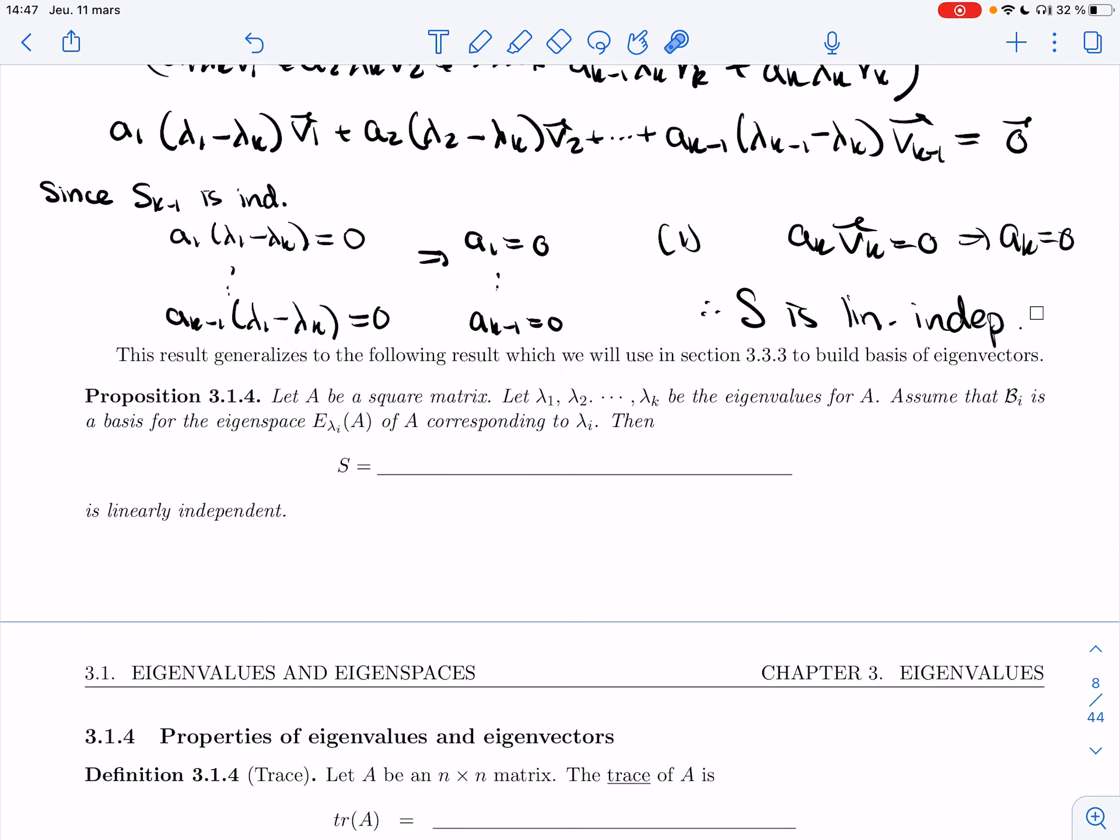can be generalized. So here's a generalization. Let A be a square matrix, let lambda_1 through lambda_k be the eigenvalues of A, and assume that I have a basis for the eigenspace E_{lambda_i}(A) corresponding to lambda_i. Then S, which is B_1 union B_2 union B_k is linearly independent. Right, so you can put the bases that you have for each eigenspace together, and you still get a linearly independent set. It might not be a basis for all of R^n, in some cases it will, in some cases it won't, but it will still be independent.